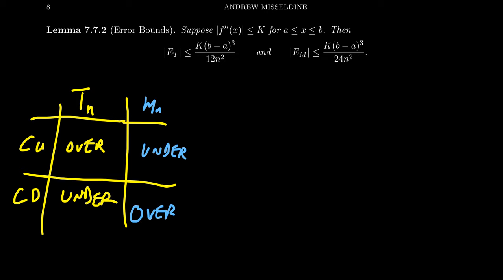The midpoint rule follows a very similar formula. The error of the midpoint rule — the difference between the true value and the midpoint approximation Mn — equals k times (b minus a) cubed over 24n squared. We can use the exact same k value; the only difference is the denominator is 24 instead of 12. So with the midpoint rule we actually expect half the error, and on average the midpoint rule is going to be twice as accurate as the trapezoid rule. That's one reason we like the midpoint rule.